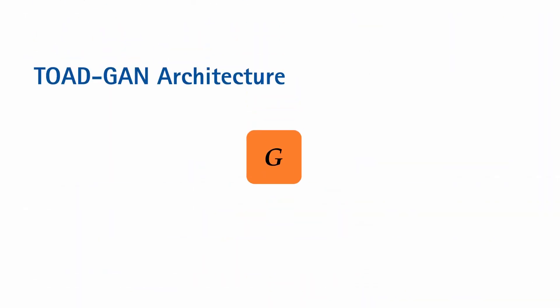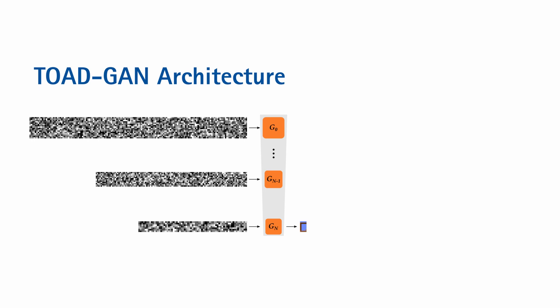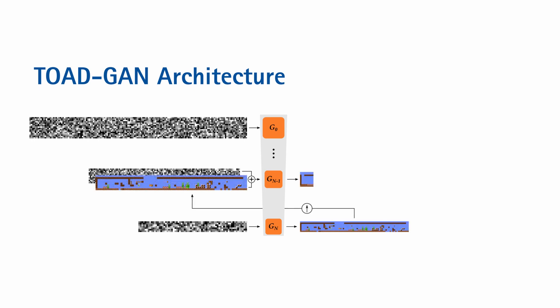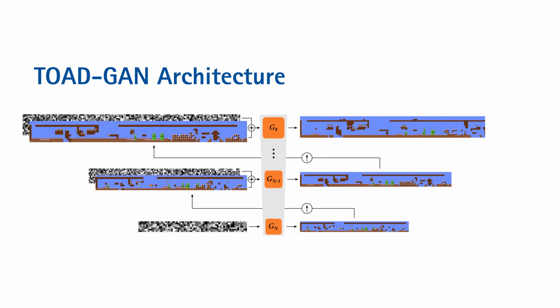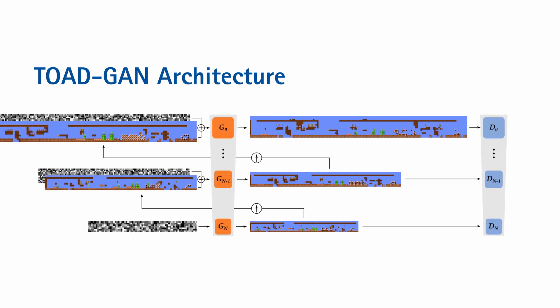However, with the convolutional layers like this, the generator would only be focused on very local patterns. In order to make sure that the level makes sense as a whole, we instead use multiple GANs that are trained on different scales of the level. We upscale and add the output of the smaller scale to the new noise map each scale, widening the field of view and making sure that both local and global patterns are learned.